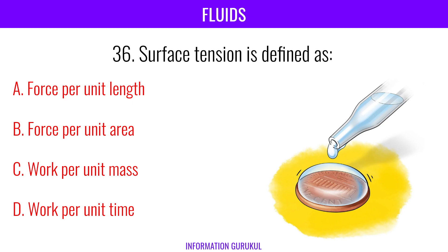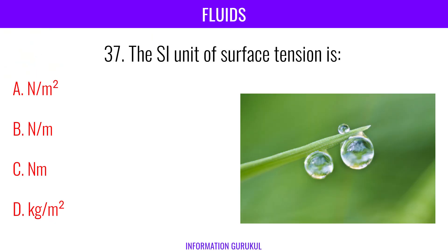Surface tension is defined as force per unit length. The SI unit of surface tension is Newton per meter.